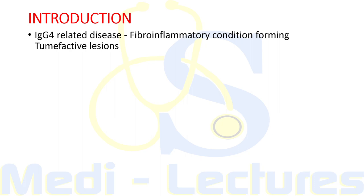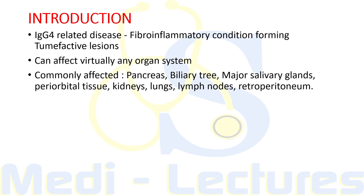IgG4 related disease is a fibroinflammatory condition characterized by a tendency to form tumefactive lesions. Tumefactive means swelled-up lesions — whichever organ or part is affected, there is a tendency of swelling of that part. The clinical manifestations are protean as this condition can affect virtually any organ system, but commonly affected organs include the pancreas, biliary tree, major salivary glands like parotid and submandibular glands, periorbital tissue, kidneys, lungs, lymph nodes, and retroperitoneum.